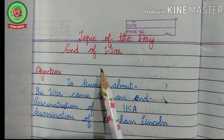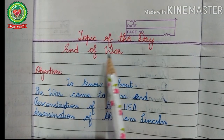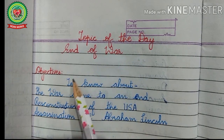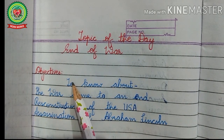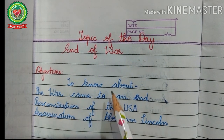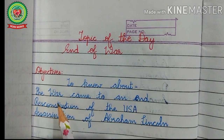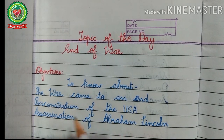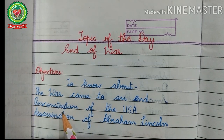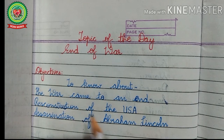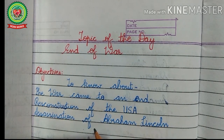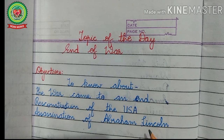Today we are going to discuss the next two topics: end of the war and period of Reconstruction. Today's topic objectives are to know about how the war came to an end, the Reconstruction of the USA after the war, and the assassination of Abraham Lincoln.